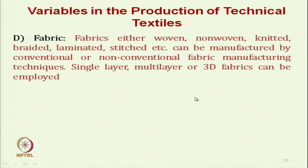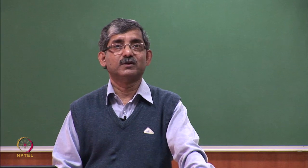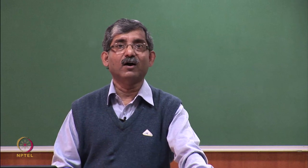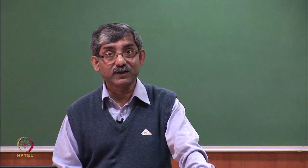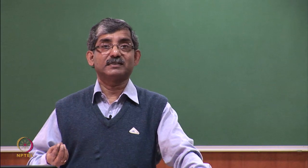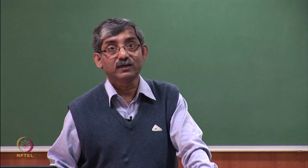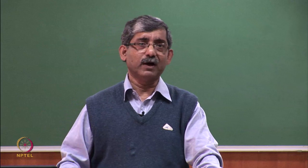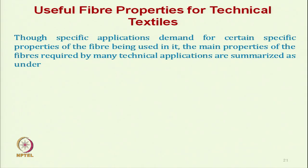For higher performance, many technical textile products use multilayer structures. So selection of single layer or multilayer — or sometimes three-dimensional multi-dimensional fabric — is made to achieve required characteristics. After everything — polymer, fibre, yarn, fabric — the finishing technique is extremely important, where we can impart special properties like special coating, breathable coating, water repellent coating, anti-static coating, or anti-soil coating. So different types of coatings can be imparted through finishing techniques. Fibre properties will be discussed in the next class.